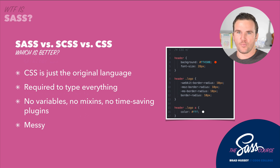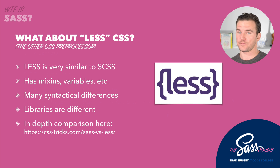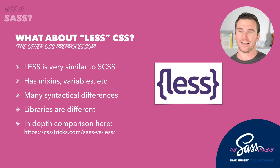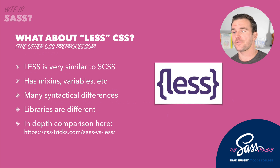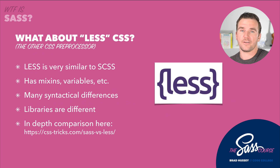What about Less CSS, the other CSS preprocessor? Less is very similar to Sassy CSS — it has mixins, variables, and so on — but it also has a lot of syntactical differences. They're not better or worse; it's just kind of one camp or the other — Nikon versus Canon, Mac versus PC sort of thing. The libraries are also different. If you want an in-depth comparison, you can go to CSSTricks.com/sass-vs-less — the URL is right there on the screen.